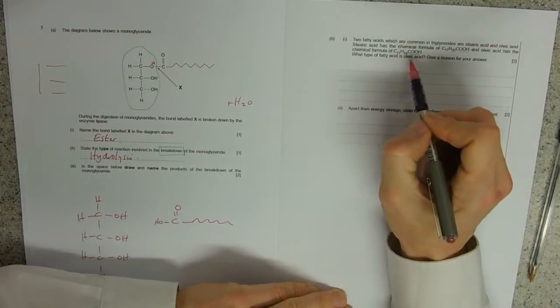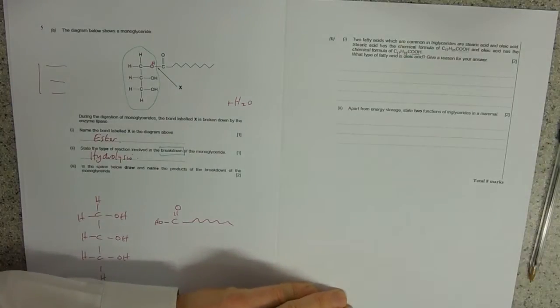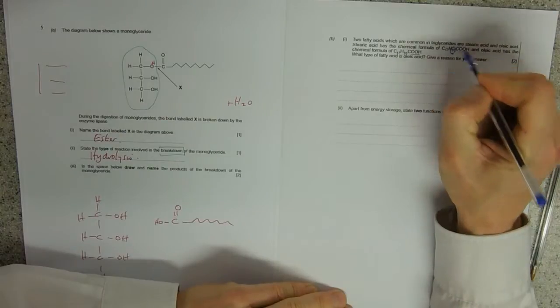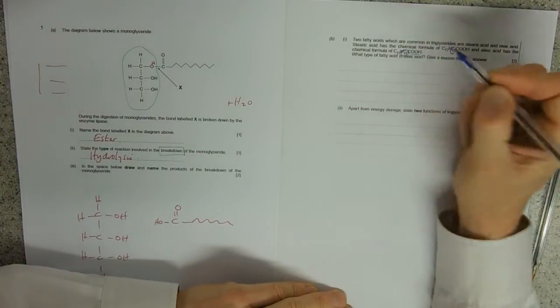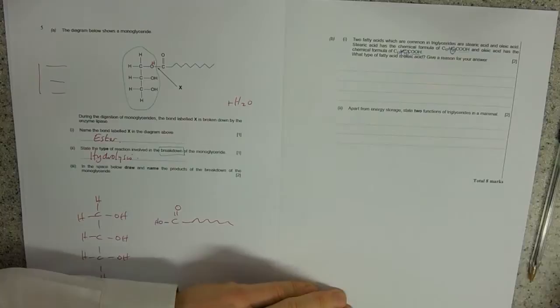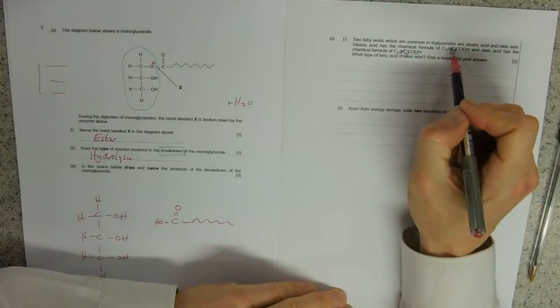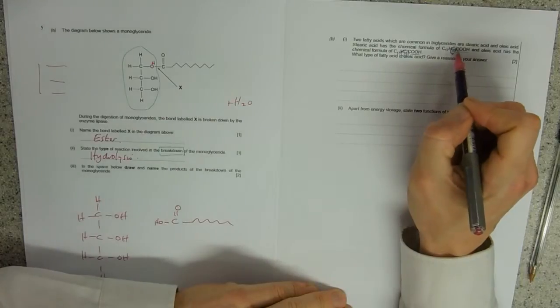And the only difference appears to be—so C17H35, C17H33—one of them's got 33 hydrogens, one of them's got 35 hydrogens. So one has got more hydrogens on the chain.